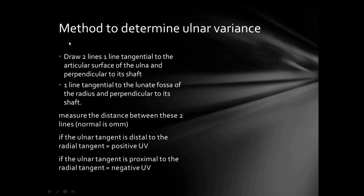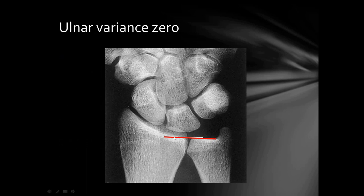After getting the X-ray, draw two lines: one line tangential to the articular surface of the ulna and perpendicular to its shaft, and the second line tangential to the lunate facet of the radius and perpendicular to its shaft. Measure the distance between these two lines. If the ulnar tangent is distal to the radial tangent, the ulna is longer than the radius — this is positive ulnar variance. If the ulnar tangent is proximal to the radial tangent, there is negative ulnar variance, meaning the ulna is shorter than the radius.